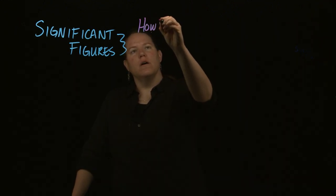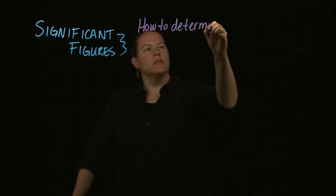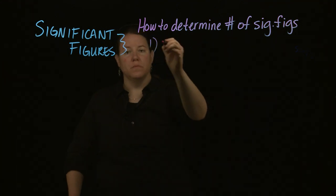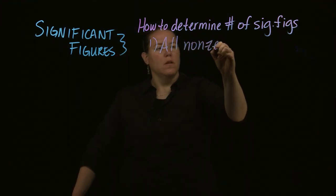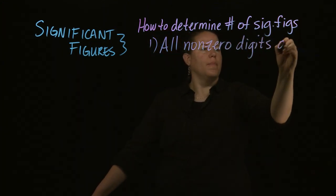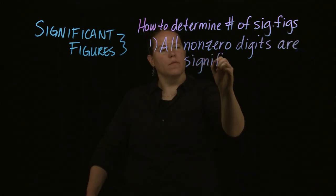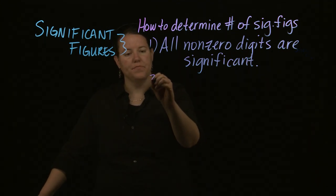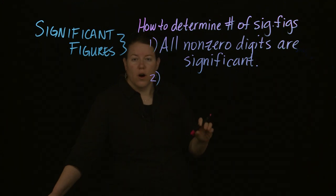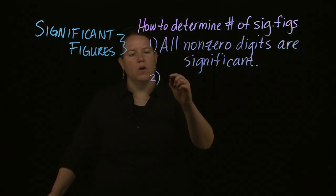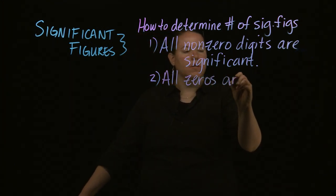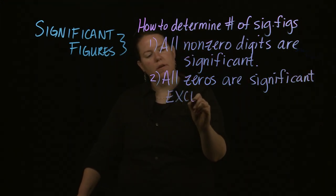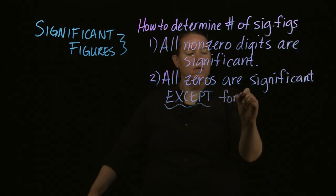To determine the number of sig figs, do the following. Rule one: all non-zero digits are significant. So everything that's not zero is absolutely counted in the significant figures. Rule two: zeros are always significant with one exception — all zeros are significant except for what we call leading zeros.